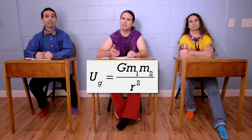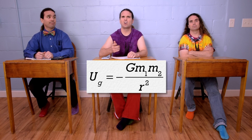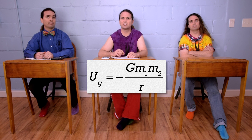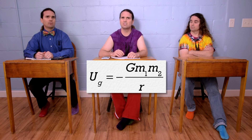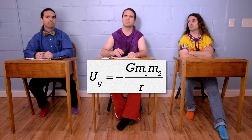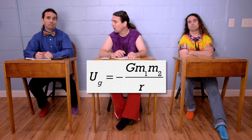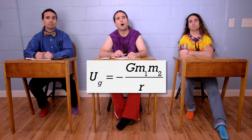You forgot the negative and r is not squared. I think you just gave us Newton's universal law of gravitation, not universal gravitational potential energy. I'm sorry. Don't worry about it, Billy. It happens all the time.